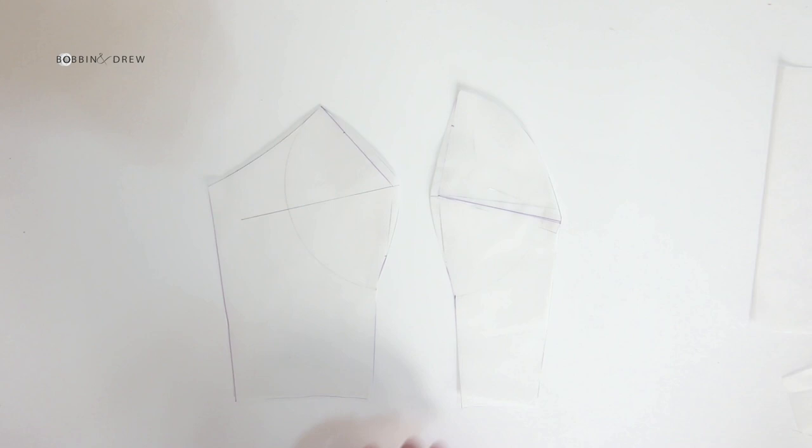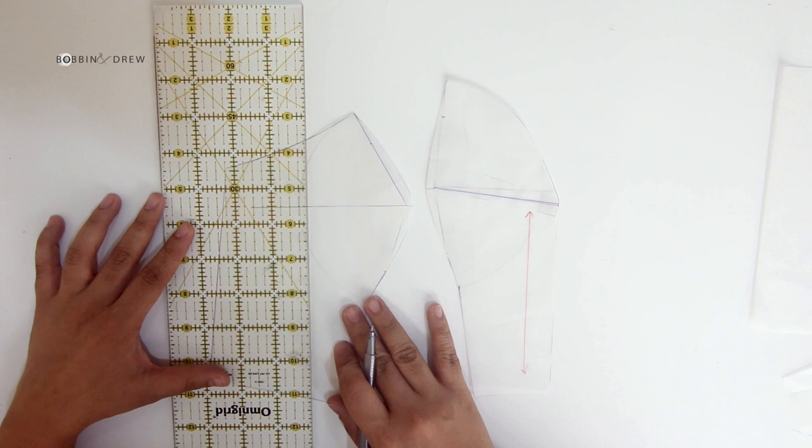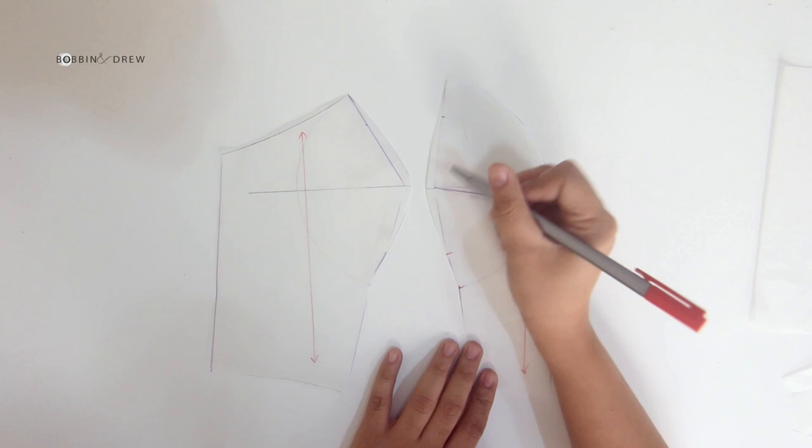So to complete the strapless front bodice pattern, let us mark the green line from both panels, for the center front panel and side front panel. Don't also forget to mark the rest of the markings—remember the two inches above and two inches below the darts. Please don't forget.